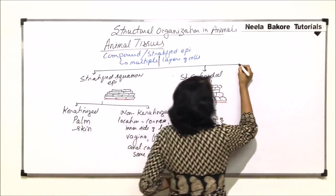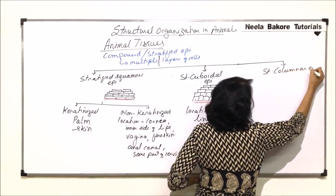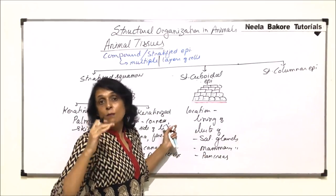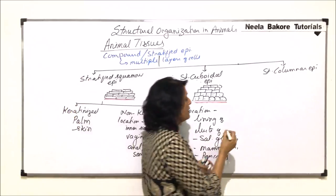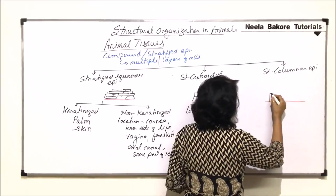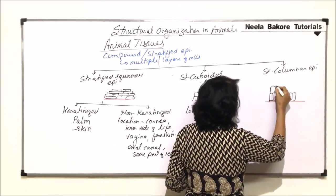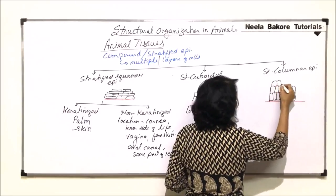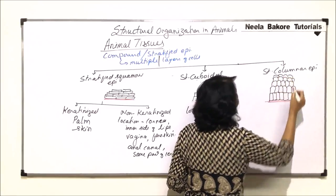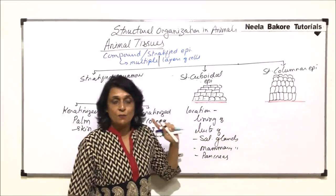The third type is stratified columnar epithelium, where the cells are tall and pillar-like. The lower cells are going to be column-like, but as we move towards the upper surface, the shape of the cell varies. The lower cells are tall and columnar; as we move up, the cells become less tall, then a little cuboidal, and at the top, maybe a little flat. The name is given on the basis of the lower cells which rest on the basement membrane.